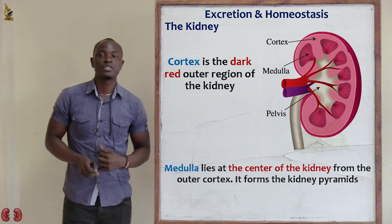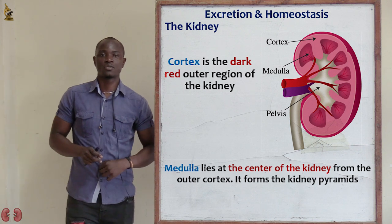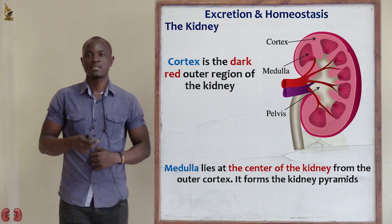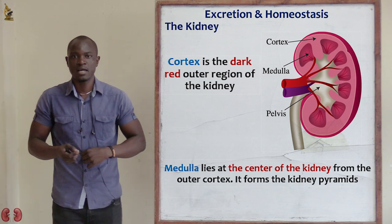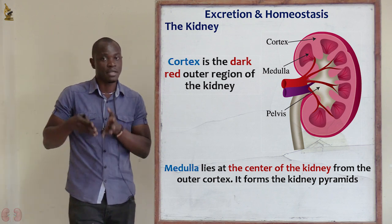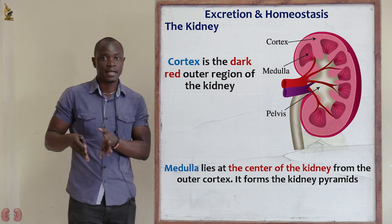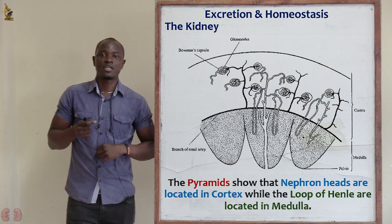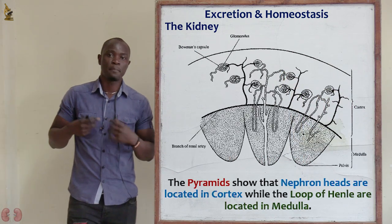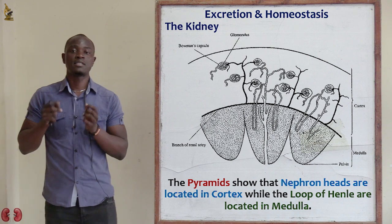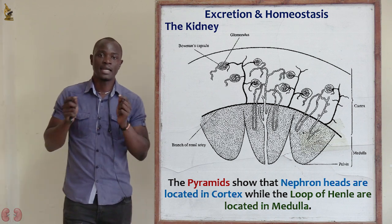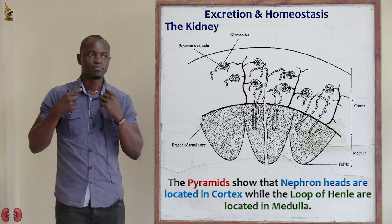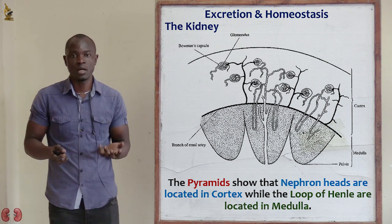After that, we have the medulla, which is the middle part. The medulla is red in color and lies at the center of the kidney. This medulla has structures called the pyramids, and inside these pyramids is where we find the nephrons, which are embedded in the medulla of the kidney.